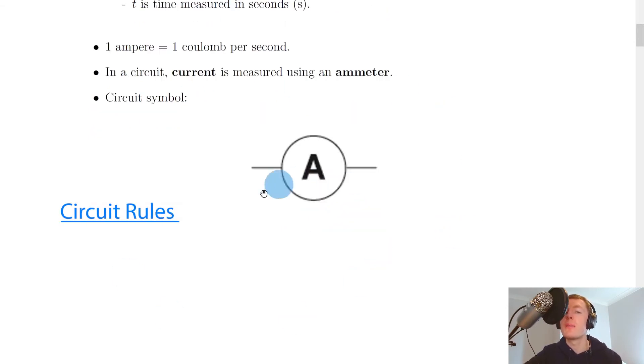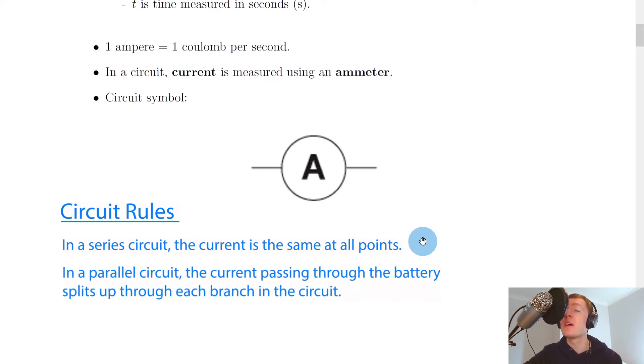And lastly, although it doesn't appear here, you should remember the circuit rules for current in a series and a parallel circuit. So remember, current in a series circuit is the same at all points. And in a parallel circuit, the current passing through the battery splits up through each branch in the parallel circuit.